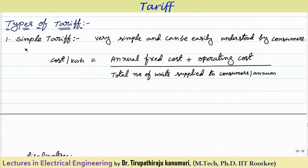The first one is simple tariff. The name itself tells that the tariff is very simple. Here, the cost per kilowatt-hour of energy will be the sum of the total cost — that means annual fixed cost plus operating cost, along with whatever profit the company is expecting — all those amounts added together, divided by the total number of units supplied to the consumers. That gives the cost per kilowatt-hour.